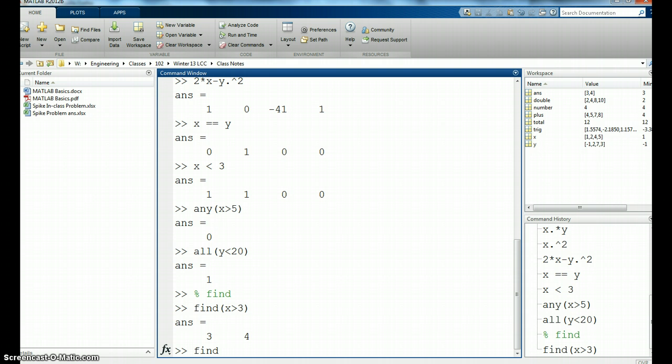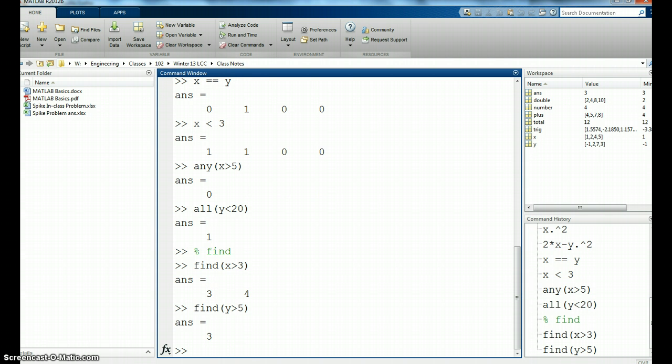Let's look at find y greater than 5. It's telling me it's at location 3 because at location 3 on y, it's a 7. So it's purely giving me the location.